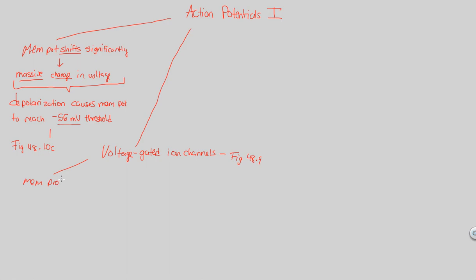Simply speaking, voltage-gated ion channels are membrane proteins — not just pores in the membrane, but definitely proteins. They function to control the passage of specific ions. How is this passage controlled? Because there are going to be specific gates for specific ions. There will be a specific gate for a sodium ion and a specific gate for a potassium ion — the two most prominent ions for understanding action potentials in this course.